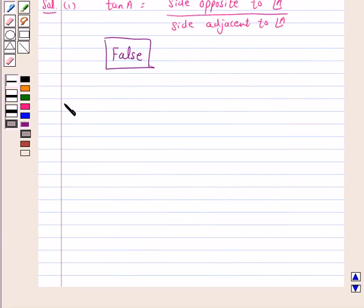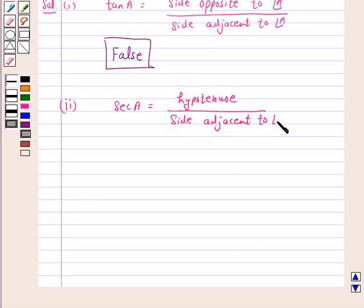Part 2. We know that secantA is equal to hypotenuse upon side adjacent to angle A. In a right angle triangle, hypotenuse is the longest side.